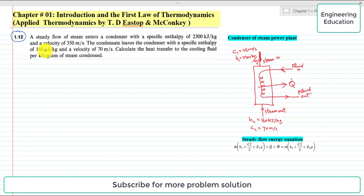The statement of Problem 1.12 is: A steady flow of steam enters a condenser with a specific enthalpy of 2300 kJ per kilogram and a velocity of 350 meters per second. The condensate leaves the condenser with a specific enthalpy of 160 kJ per kilogram and a velocity of 70 meters per second.